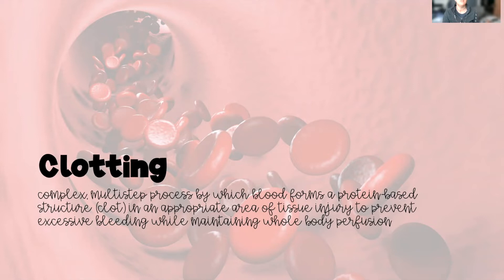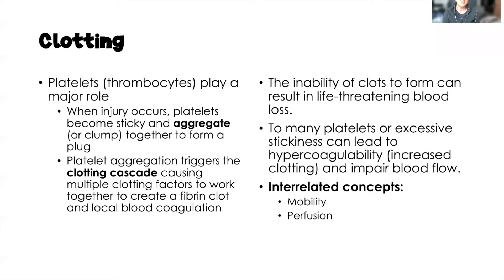That clotting process is not preventing whole body perfusion — that's really important. Platelets, or thrombocytes, play a major role in the clotting process. When injury occurs, those platelets become very sticky and aggregate, or clump together, to form the plug or the clot — that process is called platelet aggregation. Platelet aggregation triggers a clotting cascade, which causes our clotting factors, produced by our liver, to work together and form a fibrin clot and localized blood coagulation.